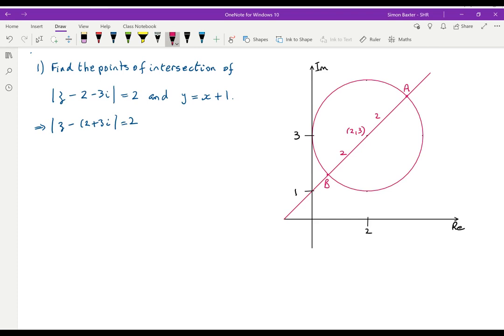You'll notice that the line y equals x plus 1 goes through 1 and has gradient 1, so when you go across 2, you go up 2. Therefore, the line y equals x plus 1 has to pass through the center of the circle.